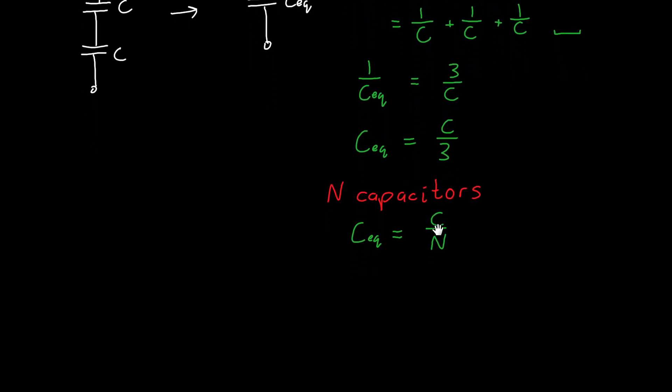So those were some symbolic examples. Let's do a couple of numerical examples. So what if I have two capacitors in series, and one of them has a value of one farad, the second one has a value of one farad, and I want to figure out what the equivalent capacitance value is.